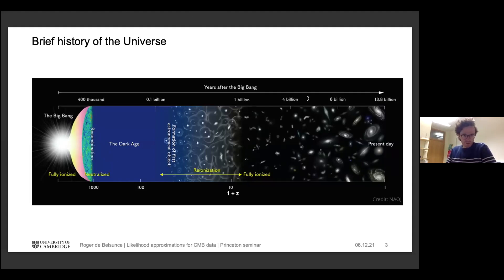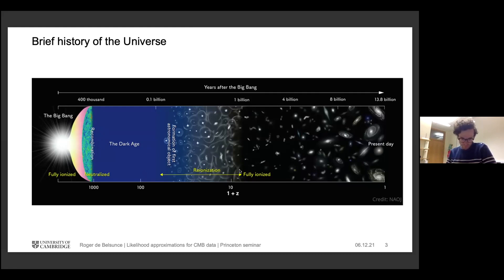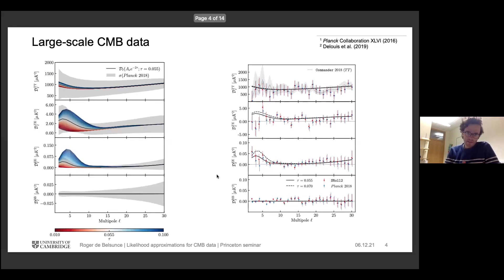Before diving into details, a brief history of the universe. The optical depth tau describes the end of the epoch of recombination and the beginning of the reionization phase. Recombination happened around redshift 1100, and reionization happens in the tens of redshifts. Our universe is roughly fully ionized around redshift 7, which we know from the absence of Gunn-Peterson troughs in high-redshift quasars. Tau is the percentage of CMB photons that re-scattered since recombination.